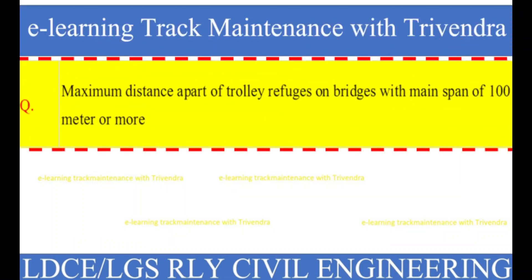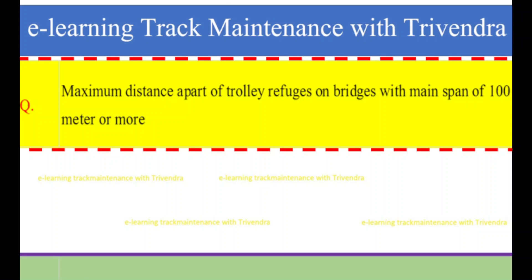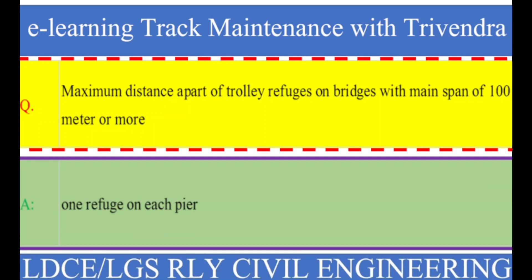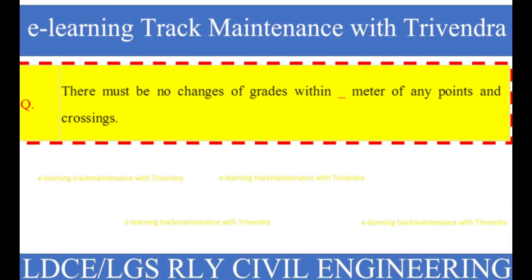Question number 51: Maximum distance apart of trolley refuges on bridges with main span of 100 meters or more. The right answer is one refuge on each pier.